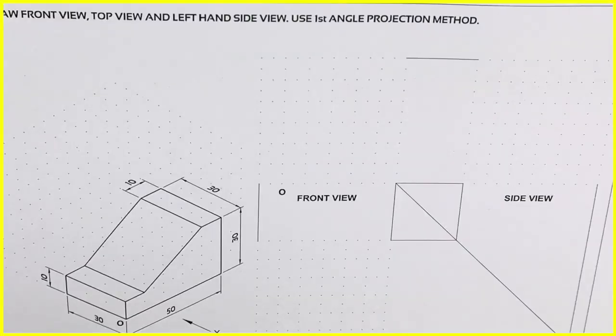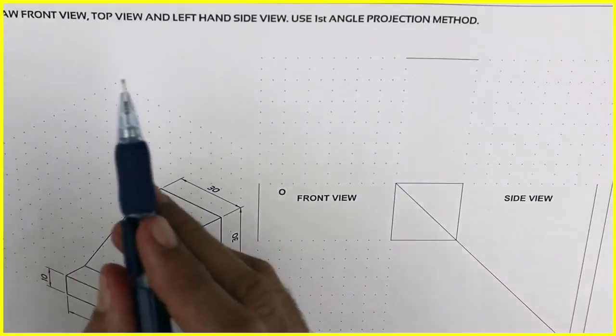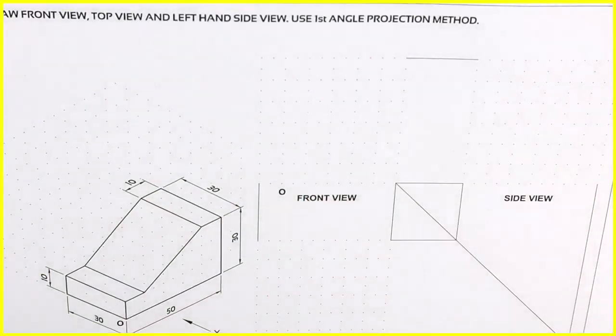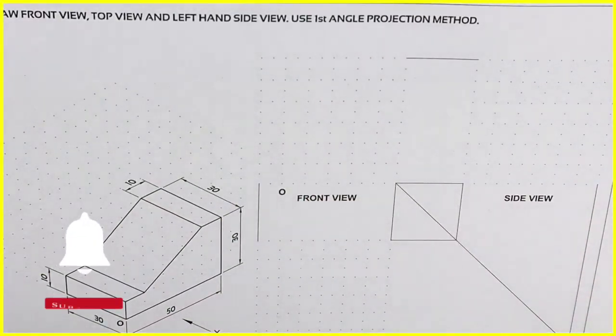So when observer will see from this arrow, you can see length, height and width. We have to draw front view, top view and left hand side view in first angle.